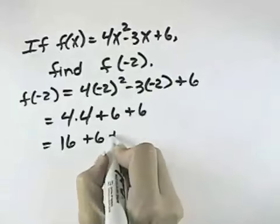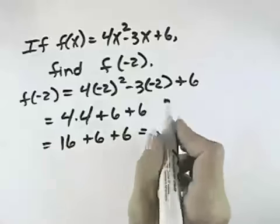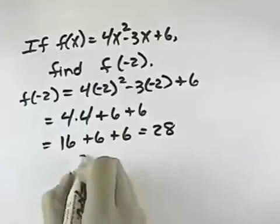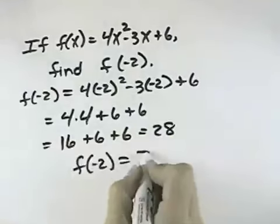plus 6, plus 6, and if we add 16 plus 6 plus 6, we'll get 28. So f of negative 2 equals 28.